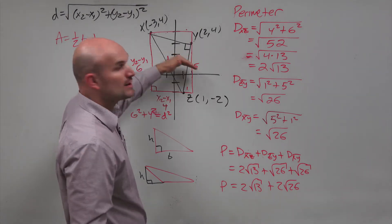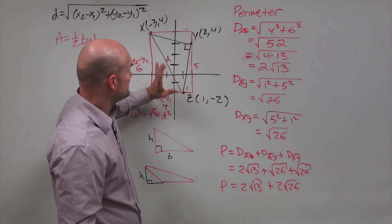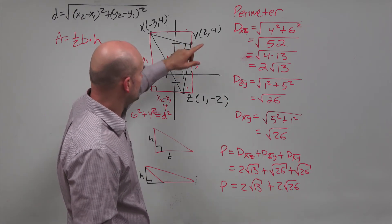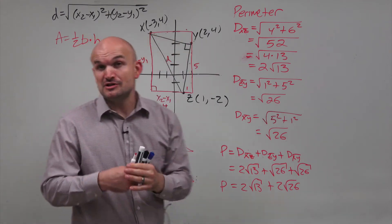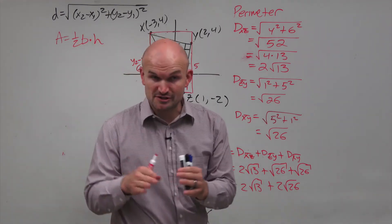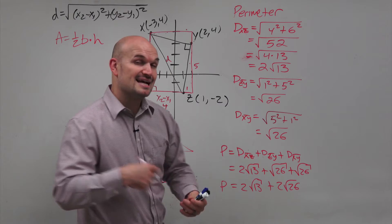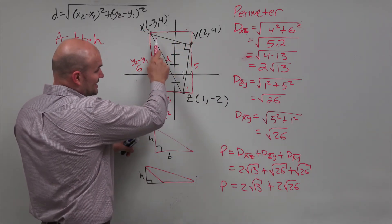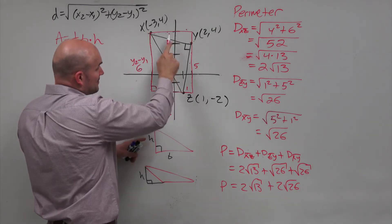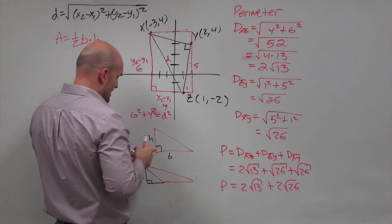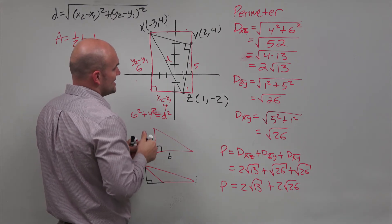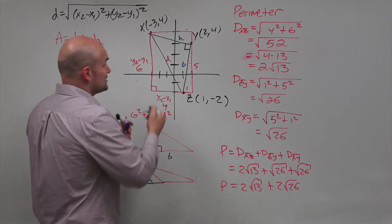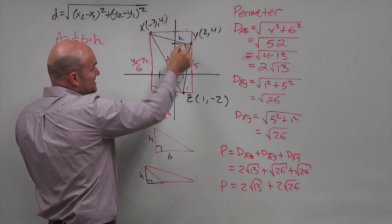Is their slope one positive and one negative? Yes. Do they have a reciprocal rise over run? This one is rise 5 over 1, and this one is rise 1 over 5. So you can see they are reciprocals of each other as far as their slopes go, and one is positive and one is negative. Since this is a perpendicular height, if you were to rotate this, this side length could be the height and this side length could be the base. Or you could do it the other way — it doesn't really matter which way.